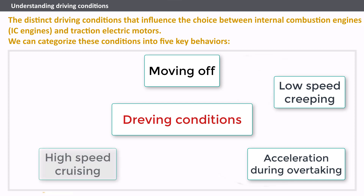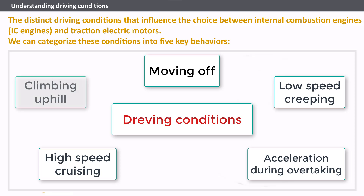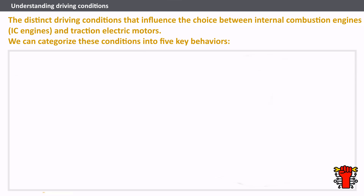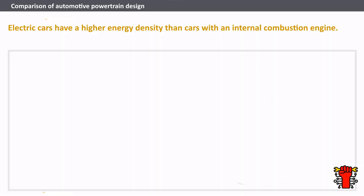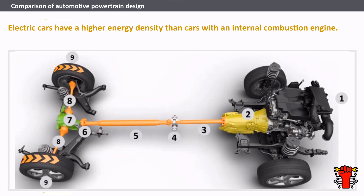Acceleration during overtaking: the need for sudden acceleration as experienced when overtaking another vehicle on a highway. High-speed cruising: constant high-speed running, often encountered on highways. Climbing uphill: the ability to ascend inclines, an essential factor for vehicles facing uphill drives. Before selecting a power plant for any vehicle, whether electric or conventional, these five behaviors must be considered.